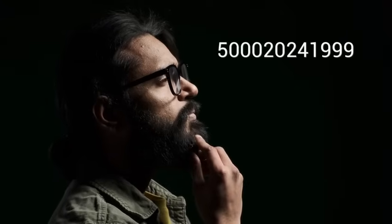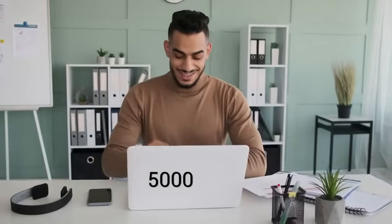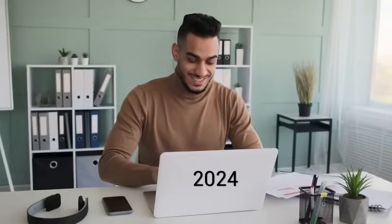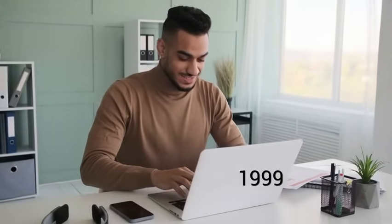So for example, if we take 5000 2024 1999, we can break it up because we noticed that we have three groups of four. And so we can take the first group of 5000, the second group of 2024 which is easier to remember because it's like a date, and the second group 1999 like another date.